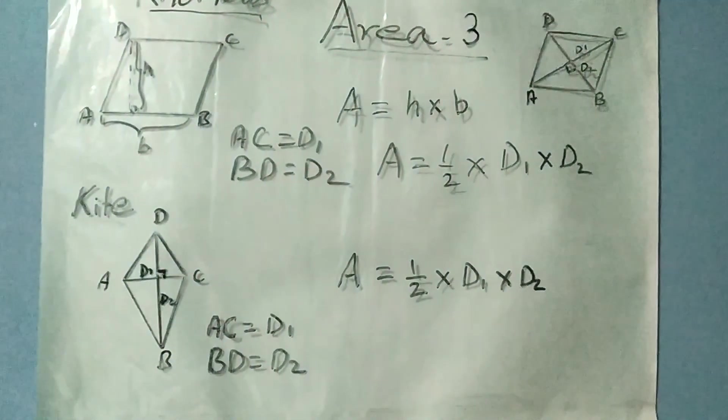So friends, I think the concept of finding the area of rhombus and kite is clear. You know that there are many other figures whose area we need to find. We will discuss those figures in upcoming videos.